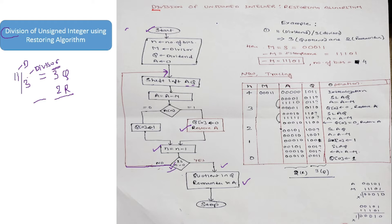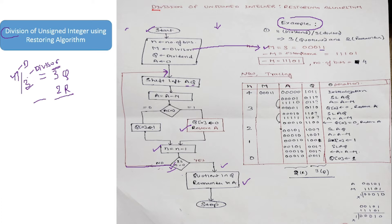Let's see with an example how we can perform division of an unsigned integer using the restoring algorithm. We take 11 divided by 3, where 11 is the dividend and 3 is the divisor. After dividing, we get 3 as the quotient and 2 as the remainder. The value of M is 3 because M is the divisor. Converting M to binary gives 0 0 0 1 1.